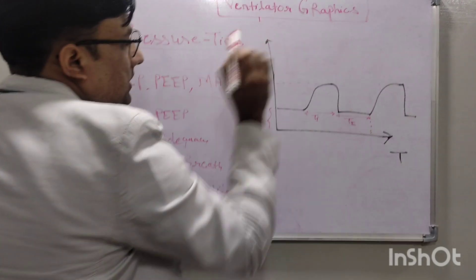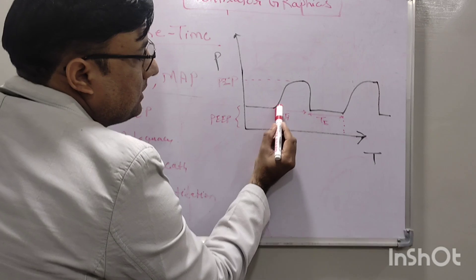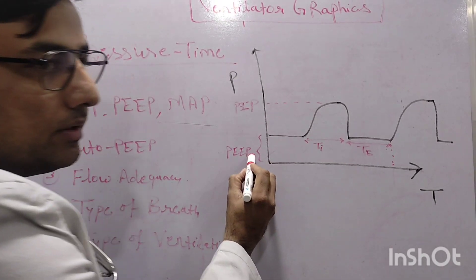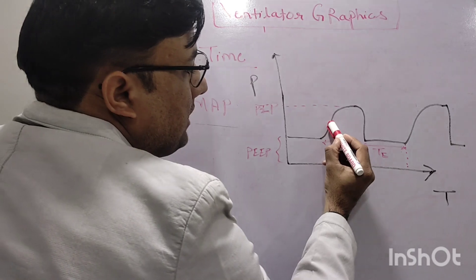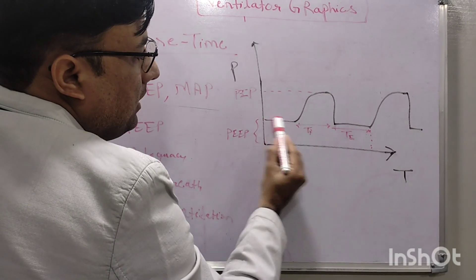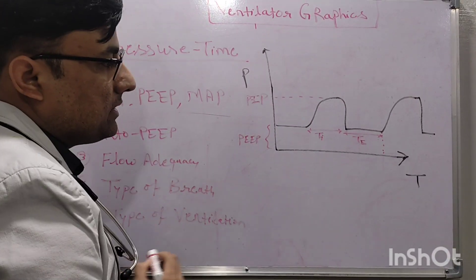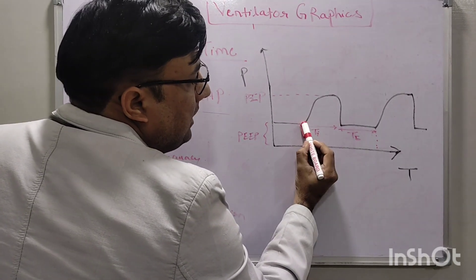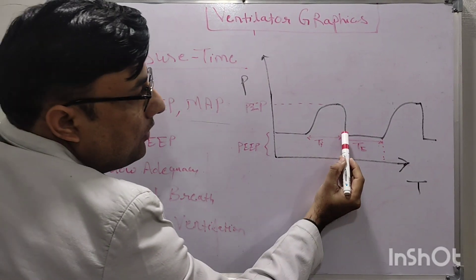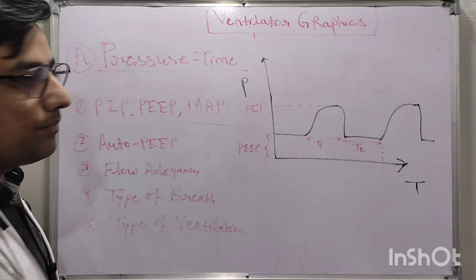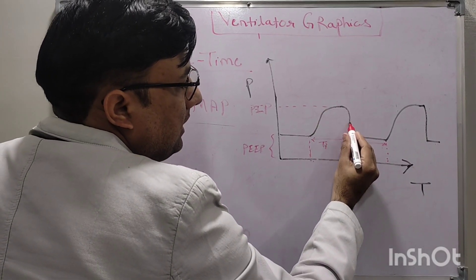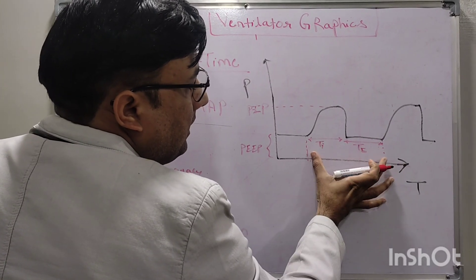In the pressure-time curve, the x-axis is time and the y-axis is pressure. The inspiration is not starting from zero; it starts from PEEP. The inspiratory pressure increases and reaches the PIP — that maximum pressure during the respiratory cycle is the PIP, and the baseline is the PEEP. The inspiratory time goes from the start to the end of inspiration. The expiratory time goes from the start to the end of expiration. The complete cycle — Ti plus Te — is one respiratory cycle.